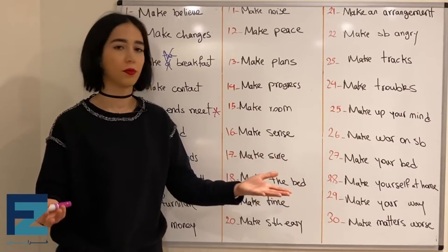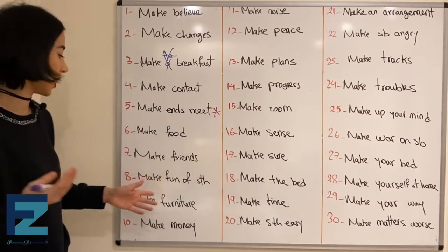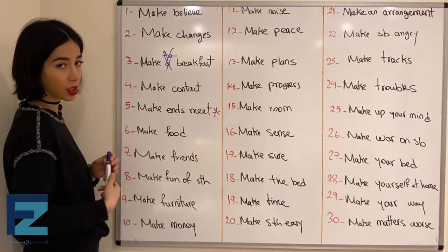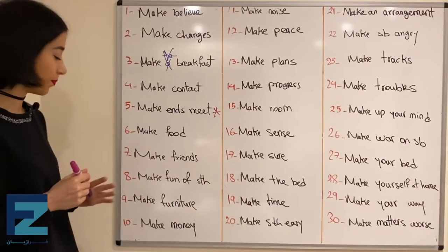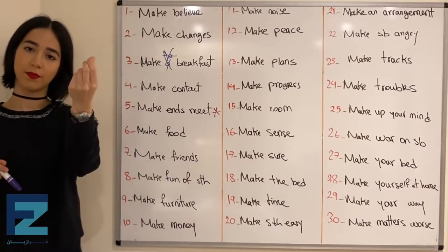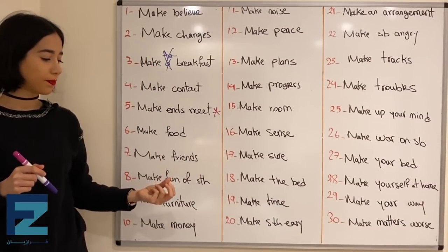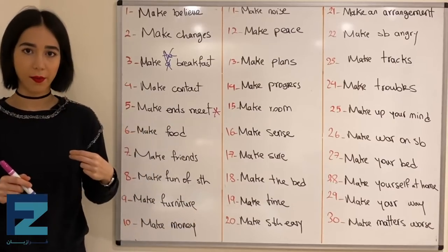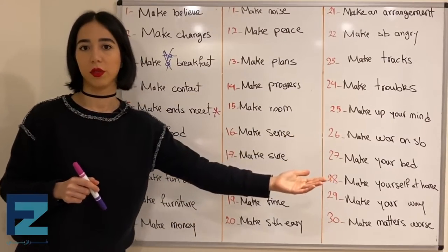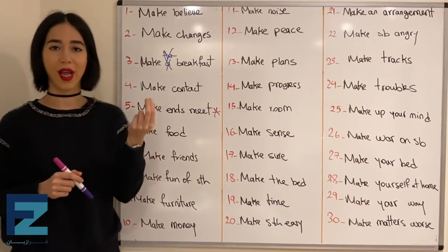Number nine: make furniture — means to build furniture. لوازم خونه درست کردن. دقت کنین که furniture uncountable هستش.